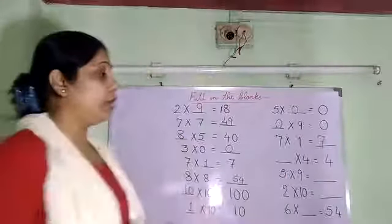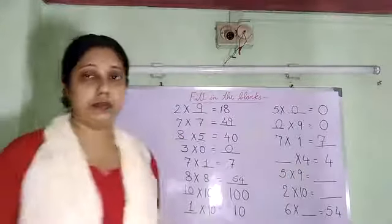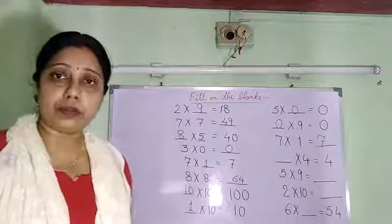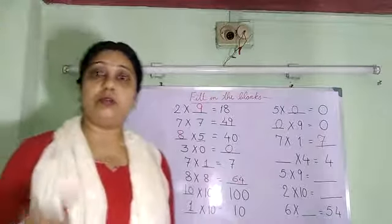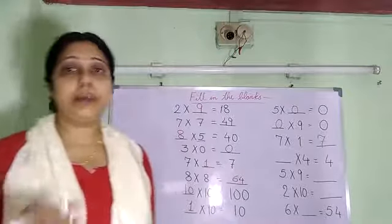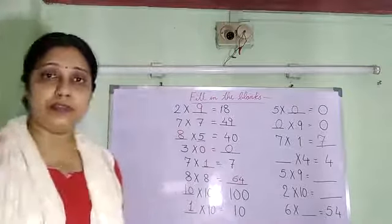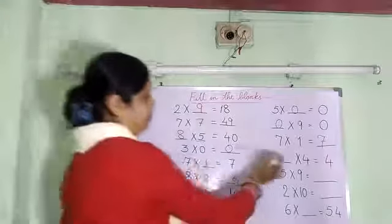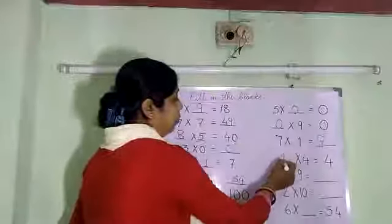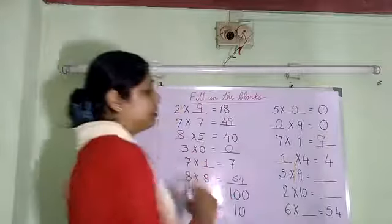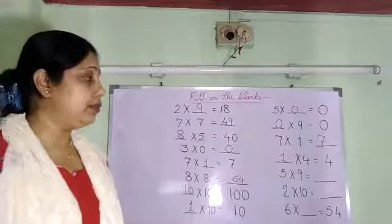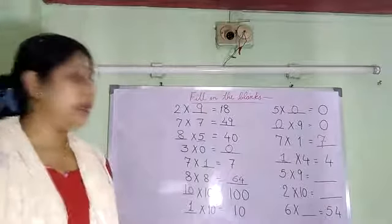4 times how much is 4? We will read the table of 4 — 4 1s are 4. So in the blank we will fill 1. The answer is 1 4s are 4.